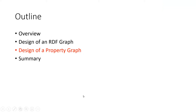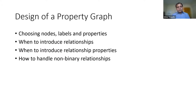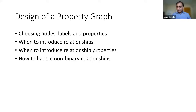Now moving on to the design of a property graph. The key design questions are: what should be nodes, labels, and properties? Should I make something a node label or introduce a new property? Should I introduce a new relationship or make something a relationship property? What do I do when things cannot be captured using triples? These are straightforward software engineering questions, and I will walk through them using simple examples.